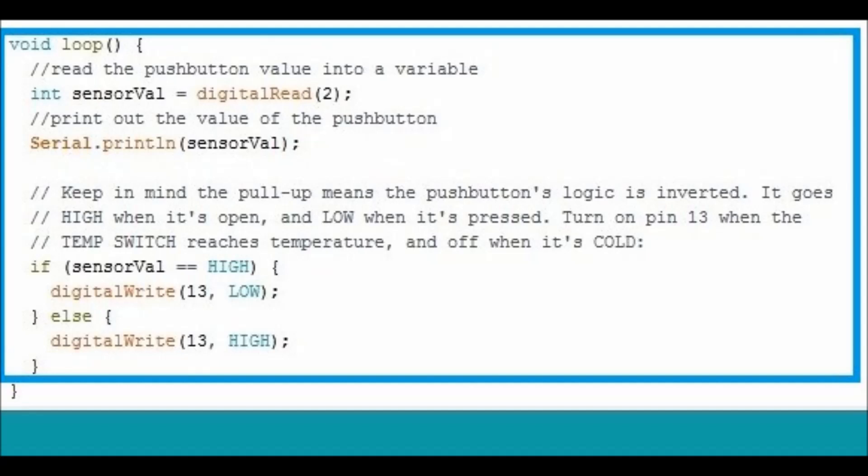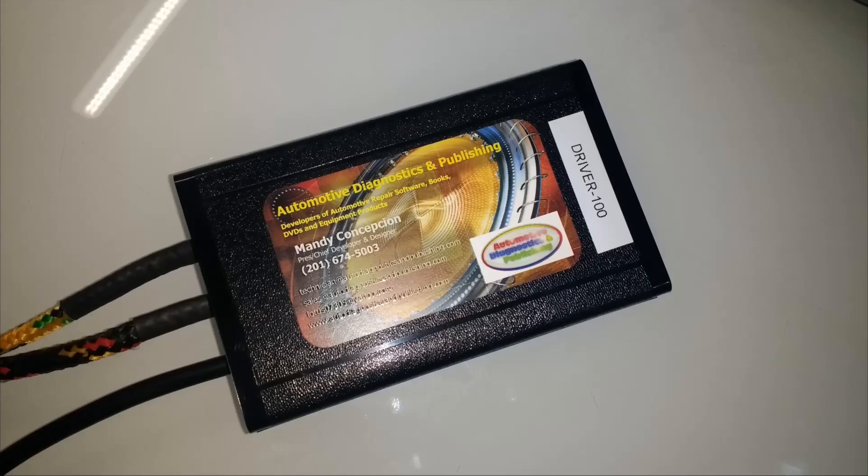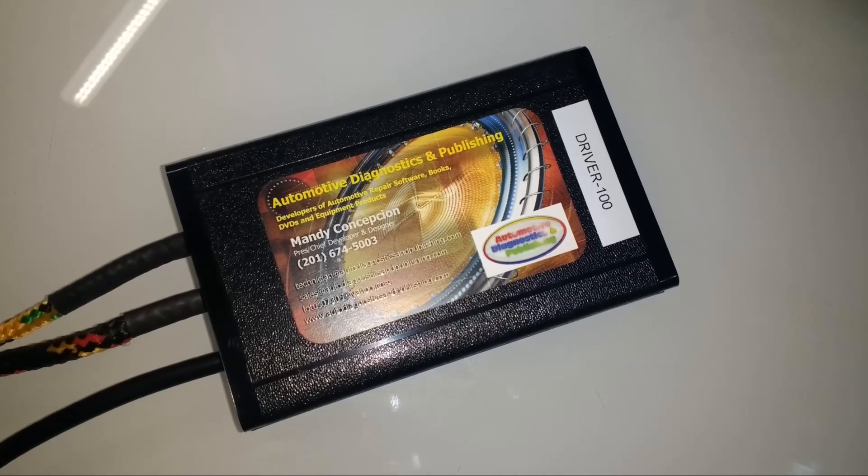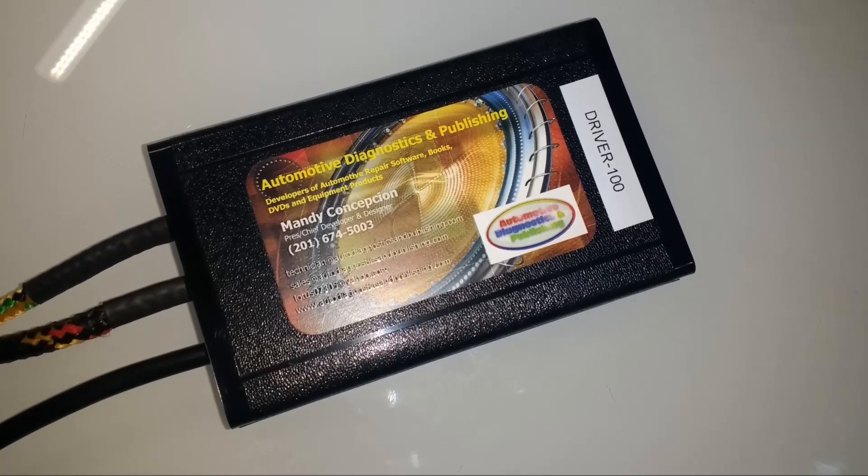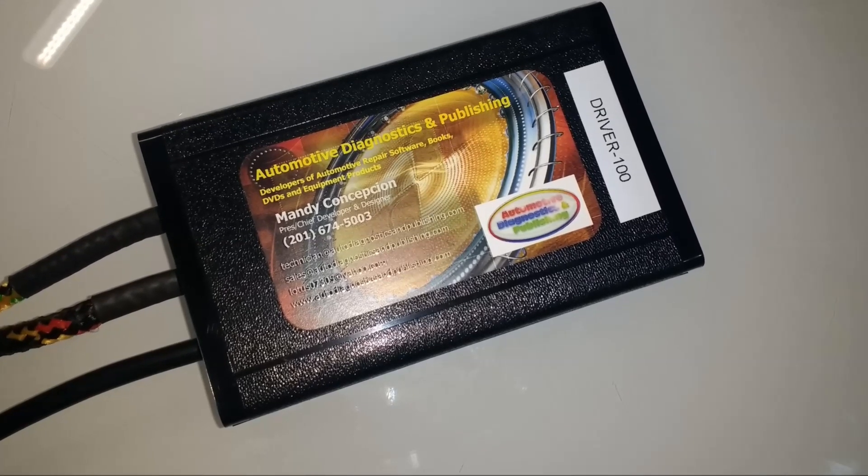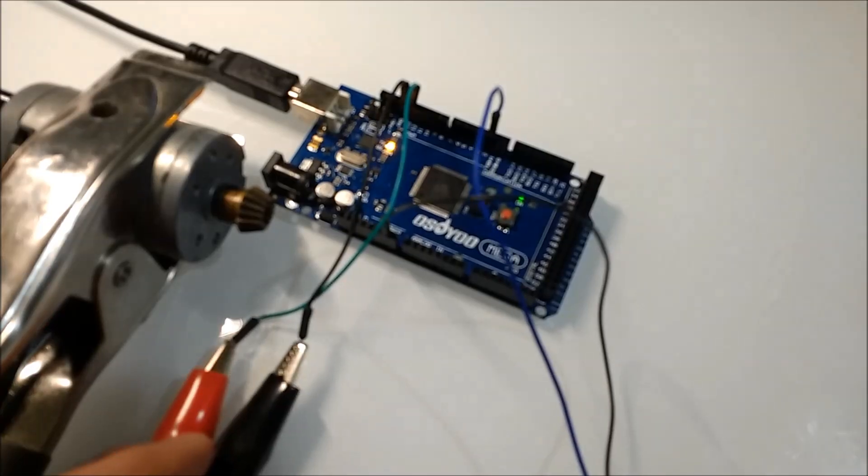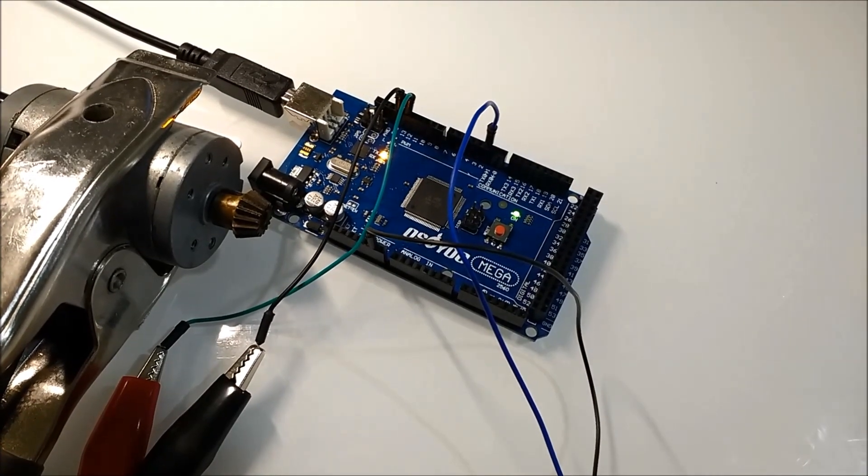We're looking at pin number 13. If sensor value is high, turn it low. If sensor else, turn pin number 13 high. And this is how, this is the output of pin number 13, which is actually seen by the driver 100, and that's what happens. It turns the motor on or off, and everything happens here in code. In this particular little code here, it does pretty much everything.